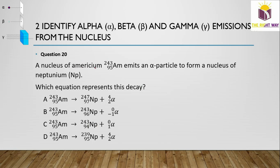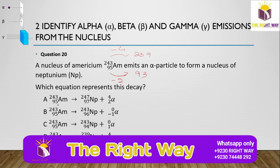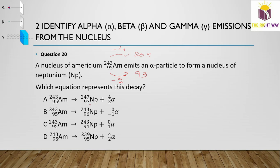Question 20: A nucleus of Americium-243 (⁹⁵Am) emits an alpha particle to form Neptunium (Np). Alpha decay decreases the mass number by 4 and the atomic number by 2. So: mass number = 243 − 4 = 239, atomic number = 95 − 2 = 93. The equation is: ²⁴³₉₅Am → ²³⁹₉₃Np + ⁴₂He.